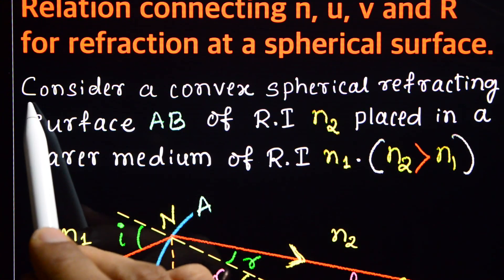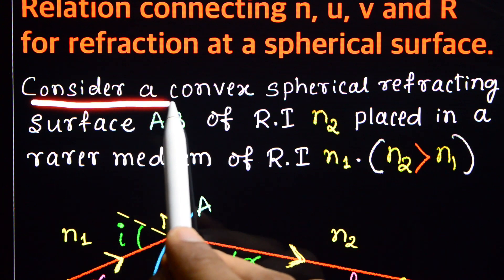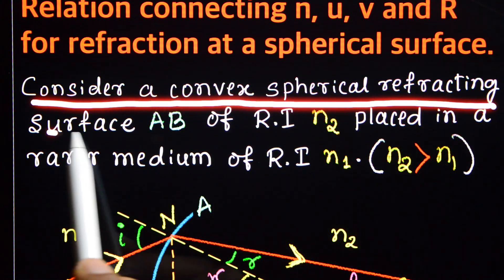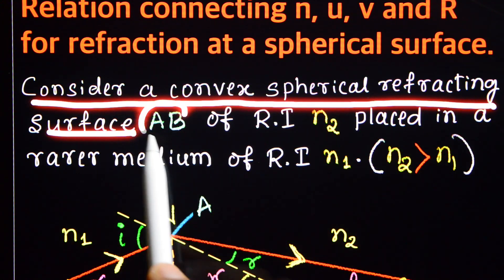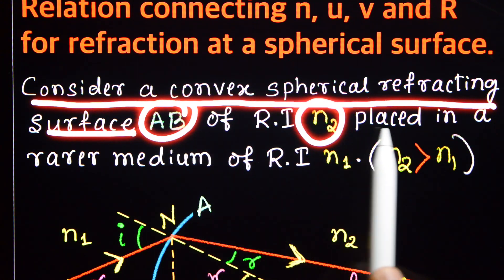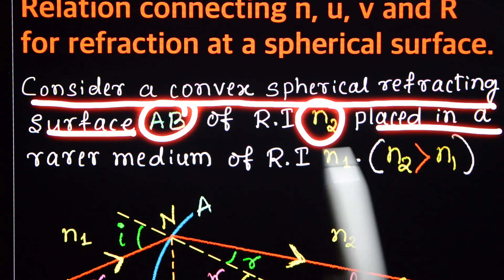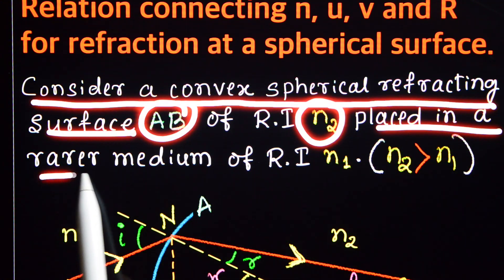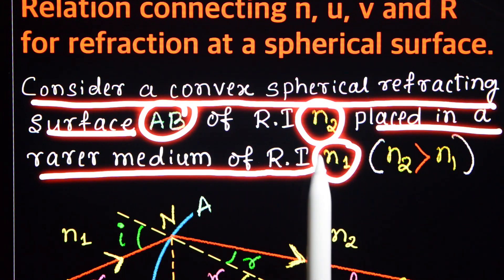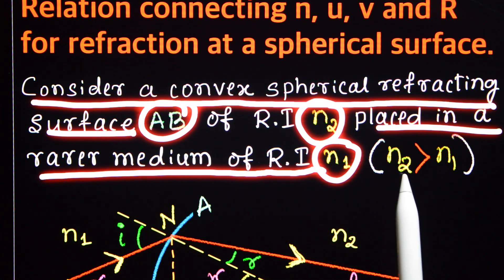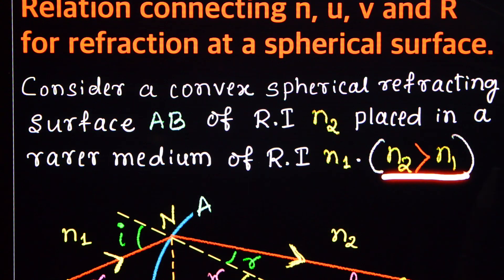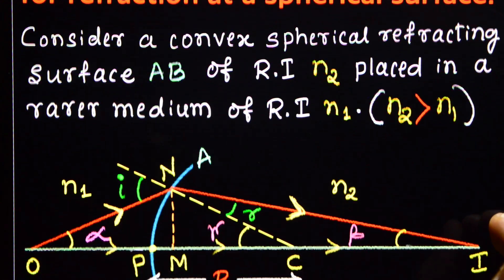First, consider a convex spherical refracting surface AB of refractive index N2, placed in a rarer medium of refractive index N1. Here, N2 is greater than N1, and N2 is the denser medium.